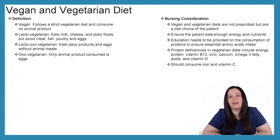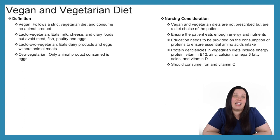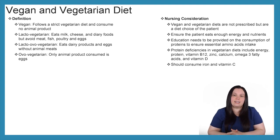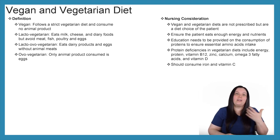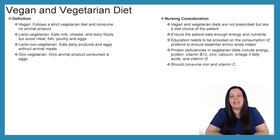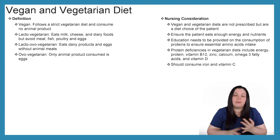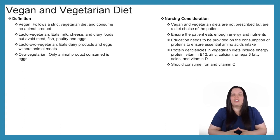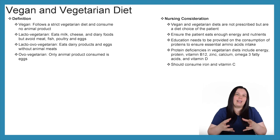When it comes to nursing considerations, vegan and vegetarian diets are not usually the prescribed diet of choice for patients because we need to ensure the patient eats enough energy and nutrients. Education needs to be provided on protein consumption to ensure an appropriate amount of essential amino acid intake. Protein deficiencies in vegetarian diets include energy, protein, vitamin B12, zinc, calcium, omega-3 fatty acids, and vitamin D. Patients should consume more iron and vitamin C to obtain the nutrients they're lacking.